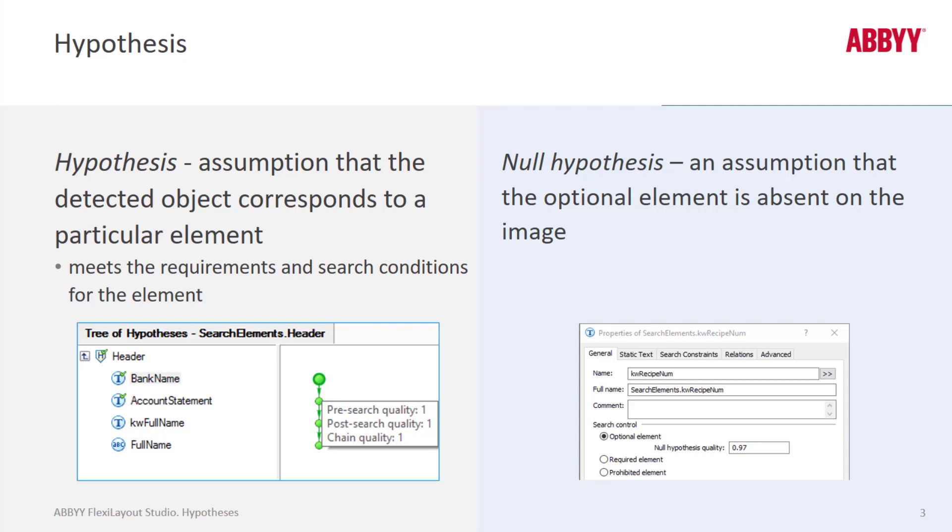So again, if we set some criteria for a character string element and did not specify a search area, perhaps many strings could be matched, but only those strings with a value of .97 or higher would be captured. And for a null hypothesis, that's where an object is not found. When an optional element is not found, FlexiLayout matching and searches for other elements continues. The term null hypothesis means that no objects meeting the search requirements were found in the search area.